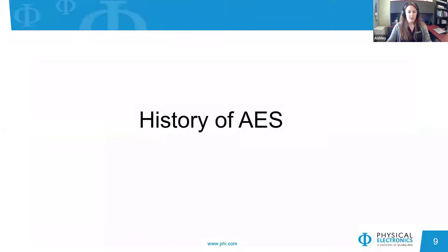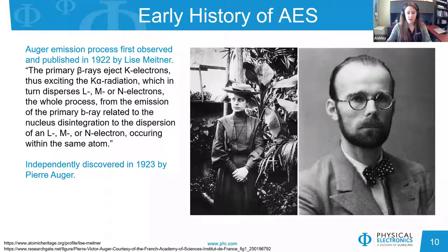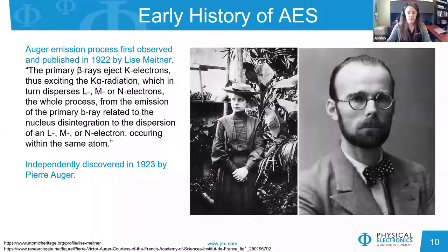Now we will look at a brief history of AES. The Auger emission process, as we know it today, was actually first observed and published in 1922 by an Austrian physicist named Lise Meitner. Her discovery was somewhat of a side effect in her greater studies on beta particles. It was then independently discovered and more extensively studied by Pierre Auger in 1923 as the central part of his PhD work, and he is credited with the discovery by most of the scientific community today.